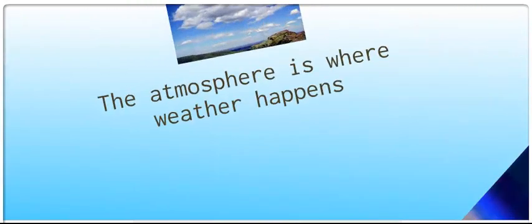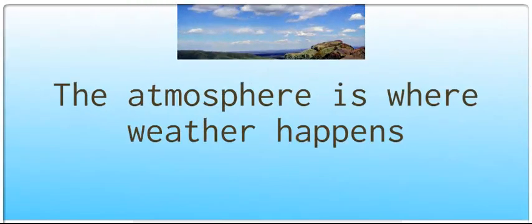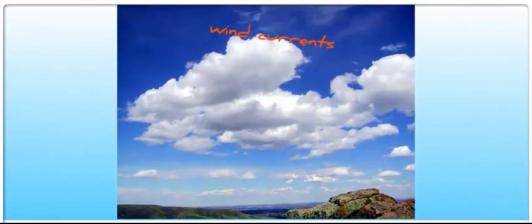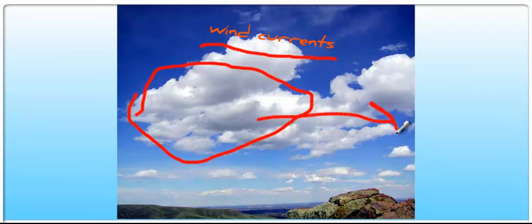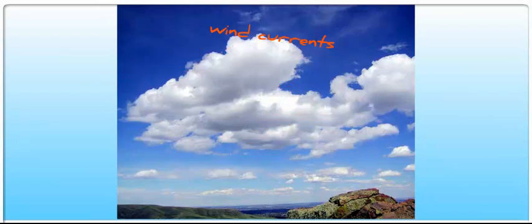The atmosphere is where weather happens. Whenever we have storms or rain or anything, the atmosphere is where this is occurring in. Wind currents are a big deal with the atmosphere because they transport things like clouds a long distance. If we didn't have that, then most of the Earth would be a desert.